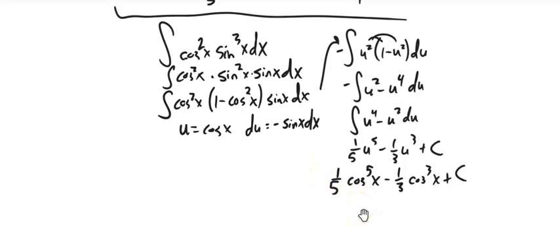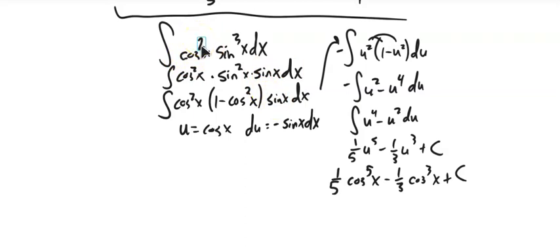Notice the strategy: we wanted one of these singletons — a single sine. If I tried to use cosine with the even power, I'd have trouble because that gives one minus sine squared, which doesn't give me a single cosine. If I'm doing u-substitution for either sine or cosine, I need the other one to fill in the du.